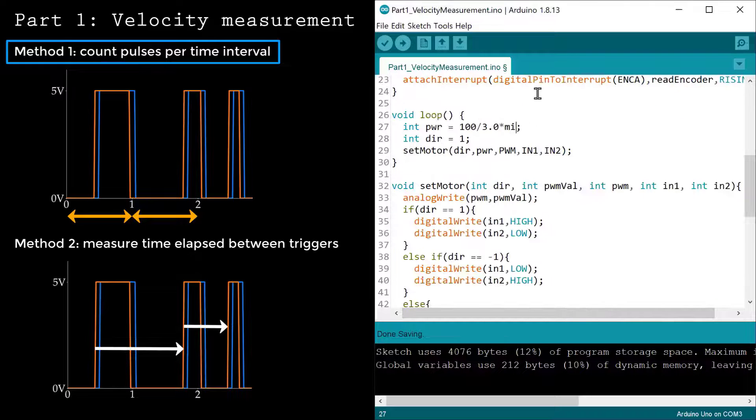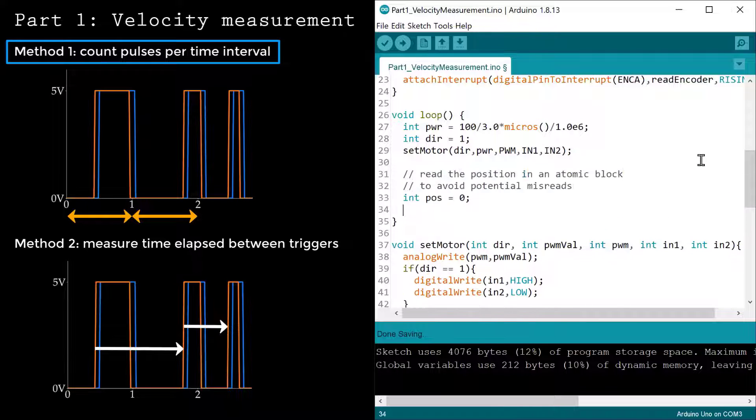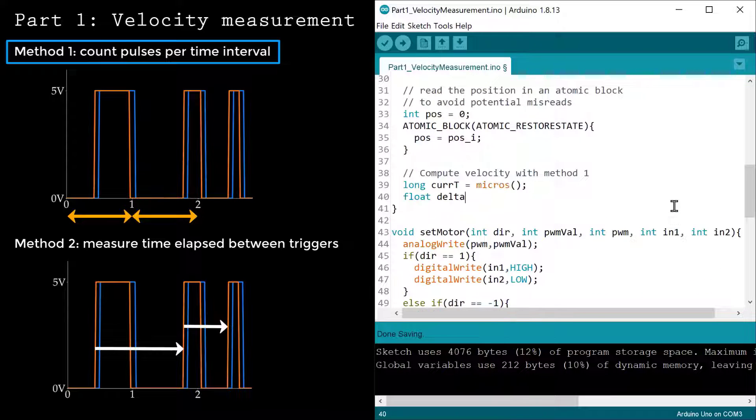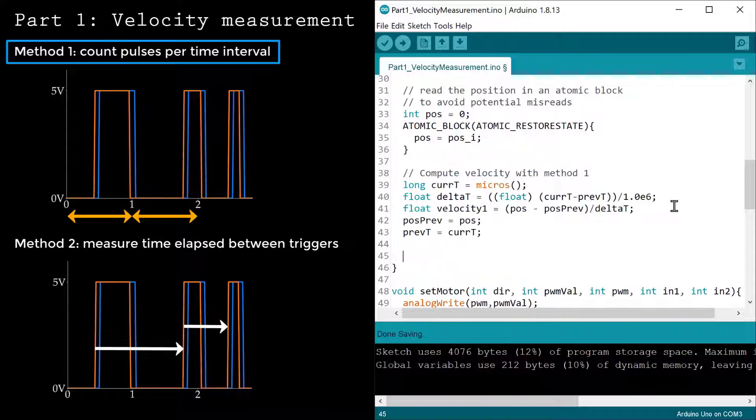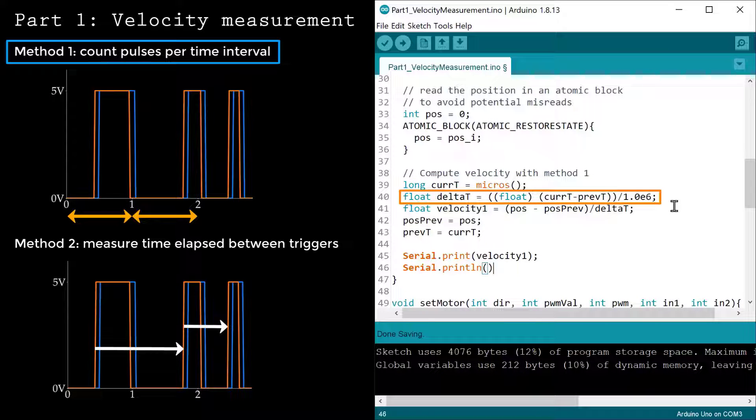Here, I'm editing the driver input to ramp the speed up over three seconds. To safely access the poseI variable, we'll use an atomic block. To compute the speed using the first method, we need to know how much time has elapsed between each iteration of the loop function. I'll measure the time elapsed using the micros function, and then estimate the time interval by taking the difference between that and the last time measurement.